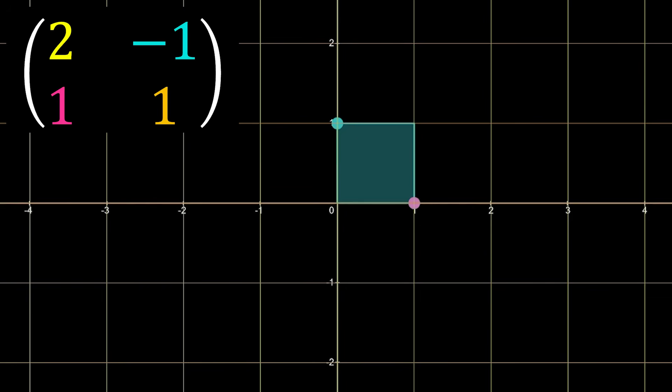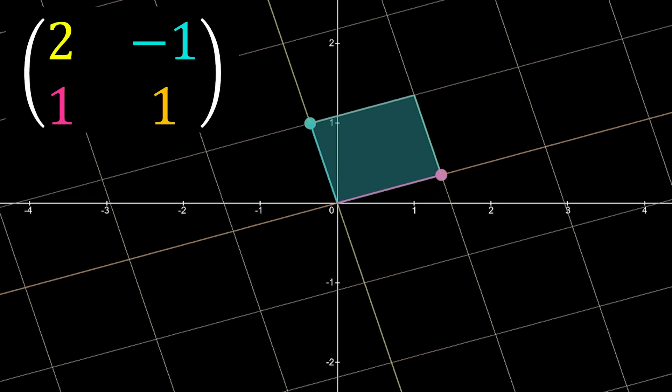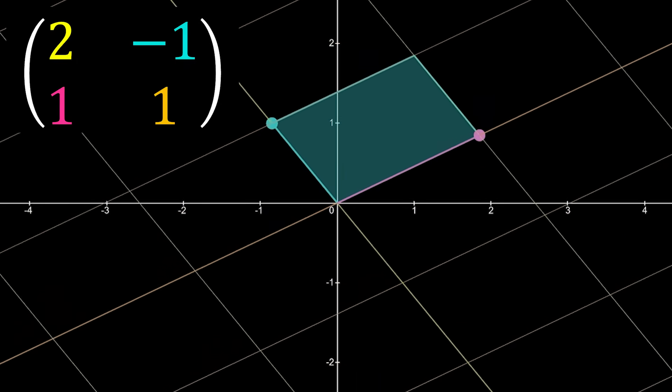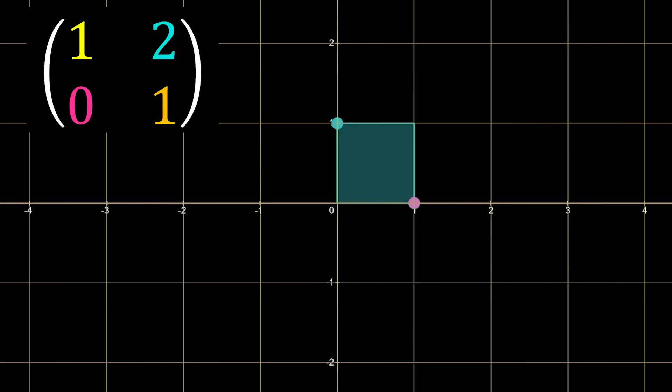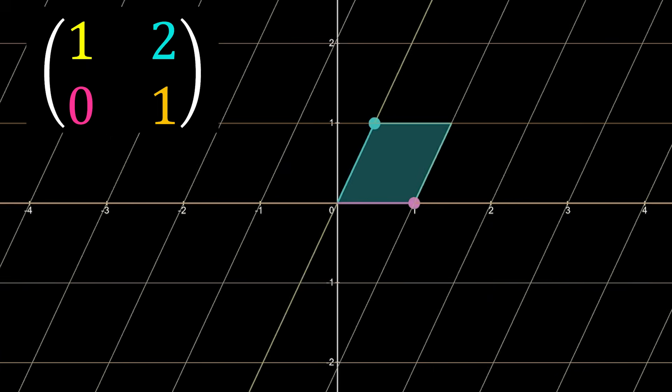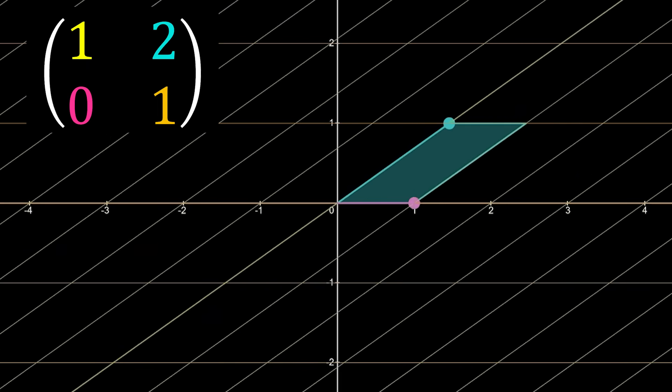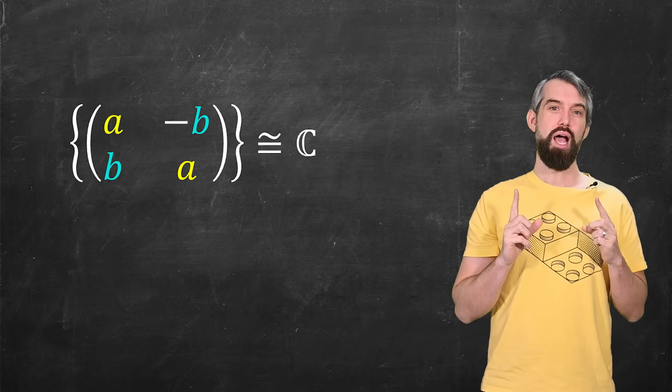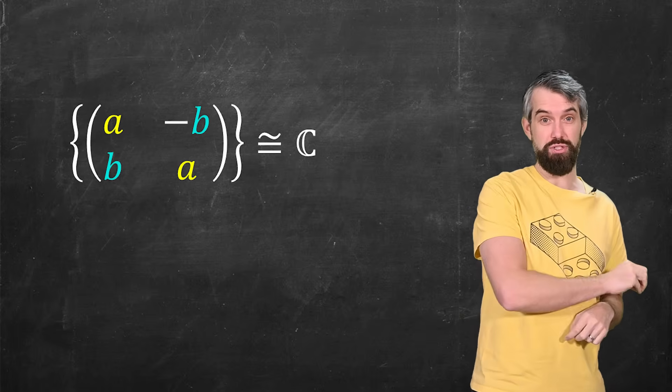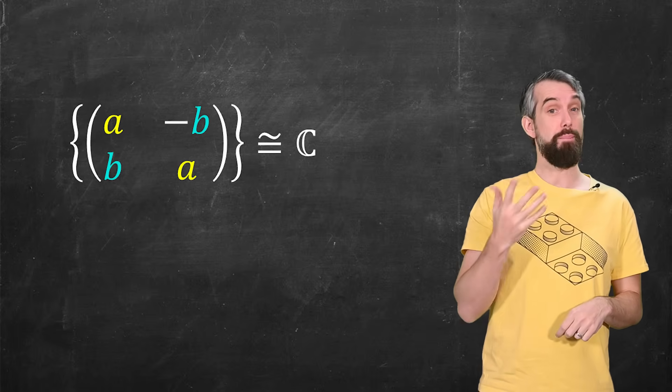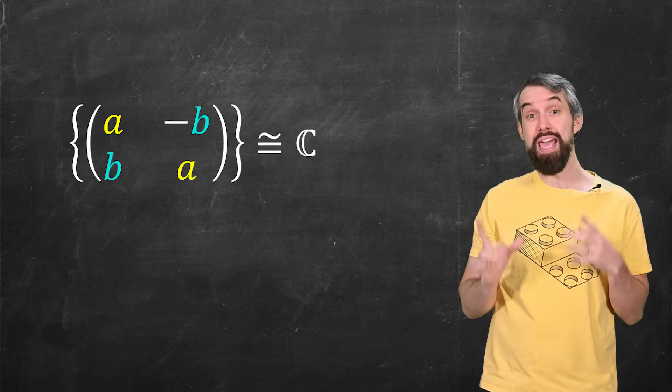Now let's turn to the geometric picture. If I look at all linear transformations, so all matrices A, B, C, D, there's all sorts of really cool varieties as to what these matrices are going to do as they transform the plane. However, we're not looking at all matrices, we're looking at the matrices of the form A, minus B, B, and A. So what do they do?